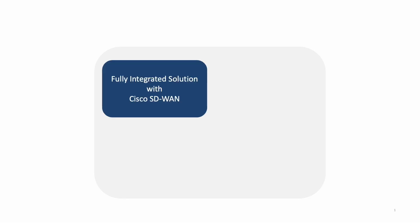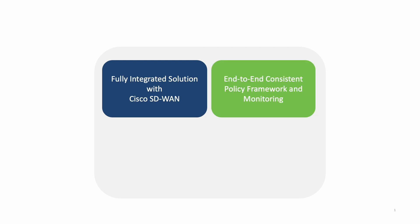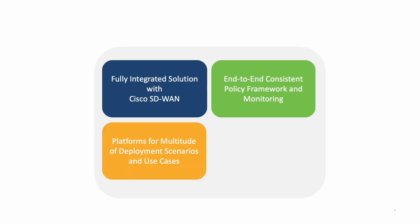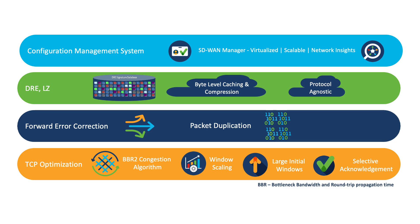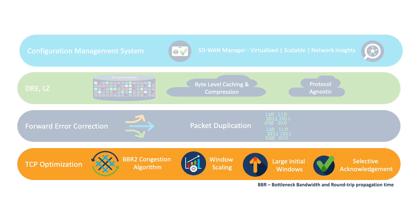Cisco SD-WAN AppQE is a fully integrated solution offering an end-to-end consistent policy framework and monitoring for a multitude of deployment use cases. One of the features in AppQE is TCP optimization, which fine-tunes the processing of TCP traffic data to decrease round-trip latency and improve throughput.